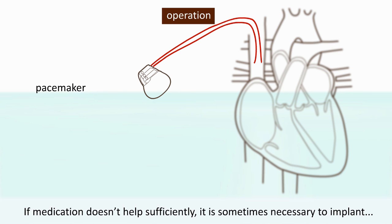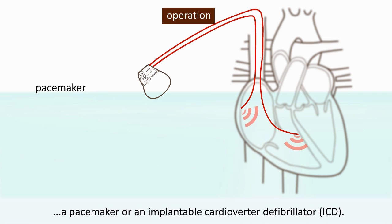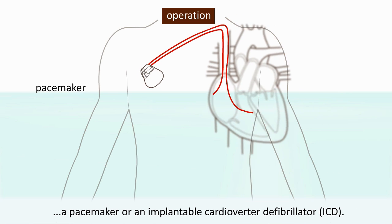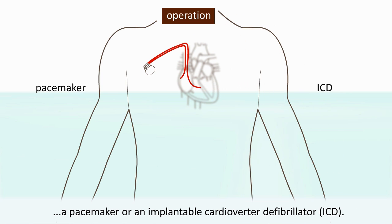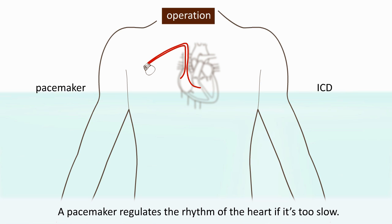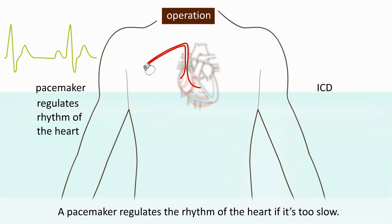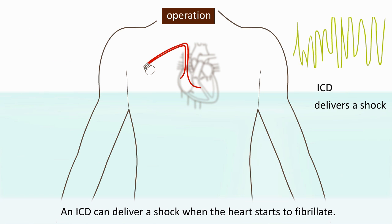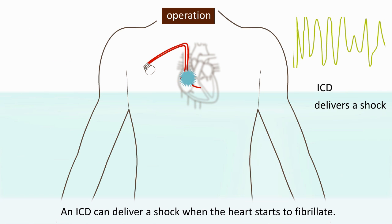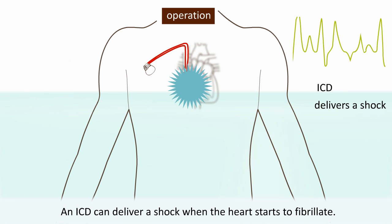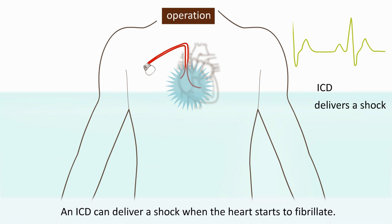If medication doesn't help sufficiently, it is sometimes necessary to implant a pacemaker or an implantable cardioverter defibrillator (ICD). A pacemaker regulates the rhythm of the heart if it's too slow. An ICD can deliver a shock when the heart starts to fibrillate.